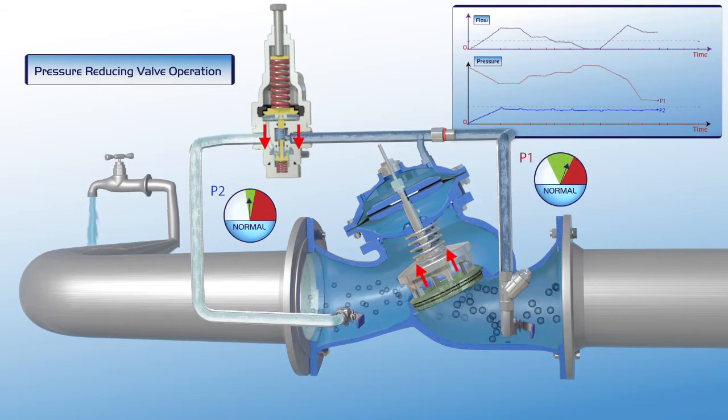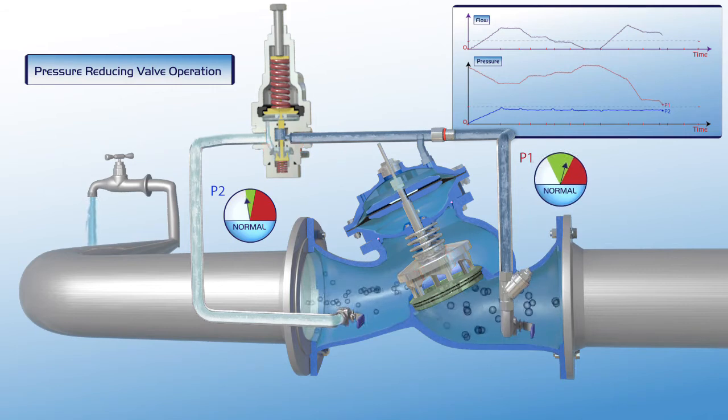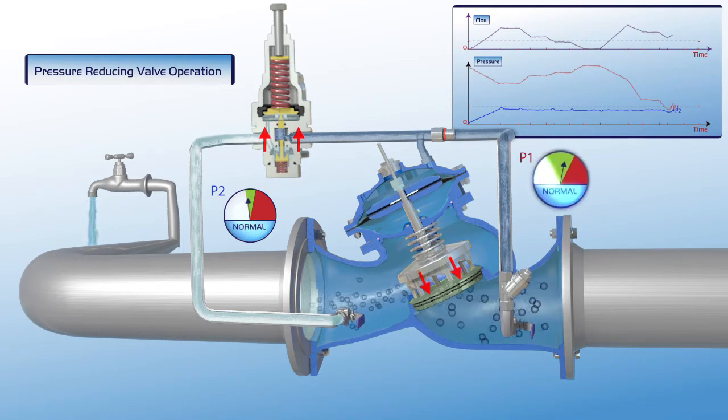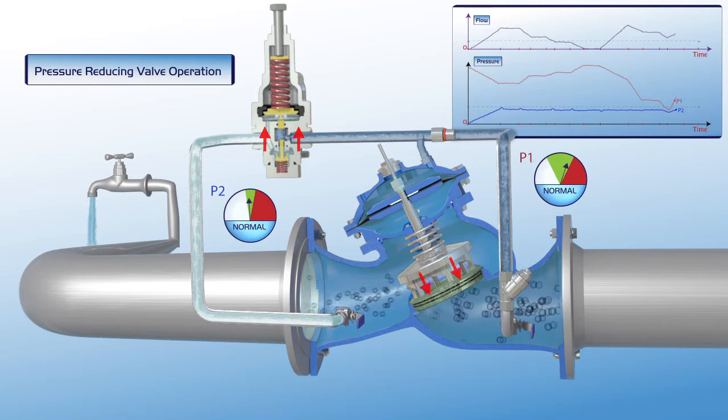In the event of a major drop in upstream pressure, the valve opens fully in order to supply the maximum possible pressure to the consumer pipeline. In this way, the valve ensures continuous water supply, even if pressure is below the desired level.